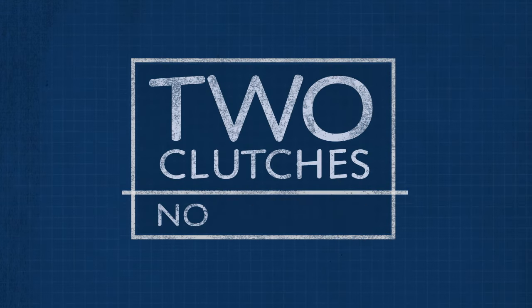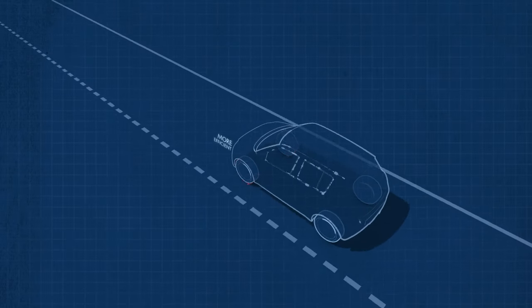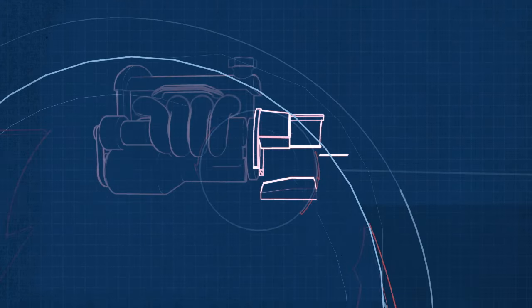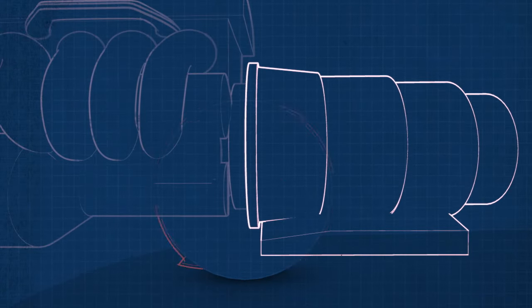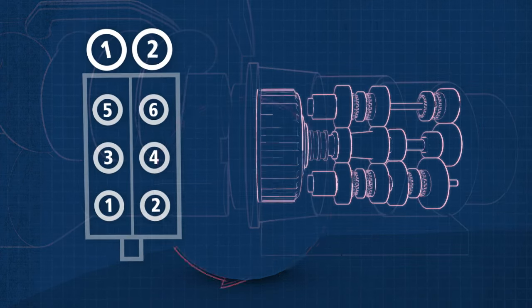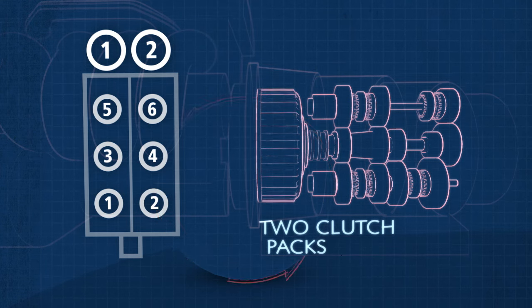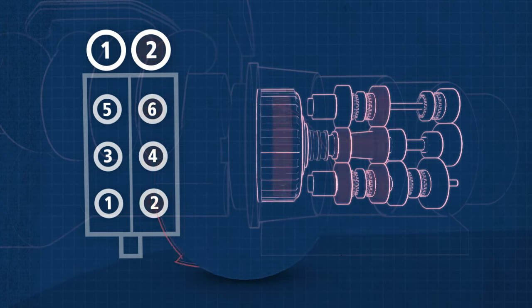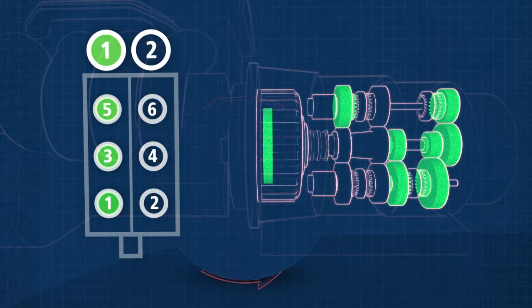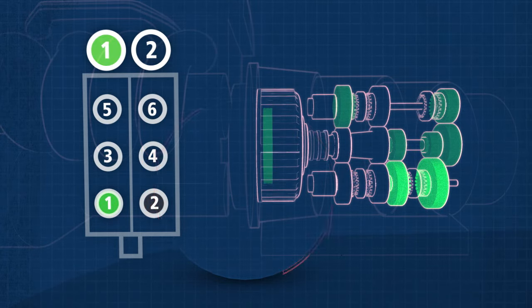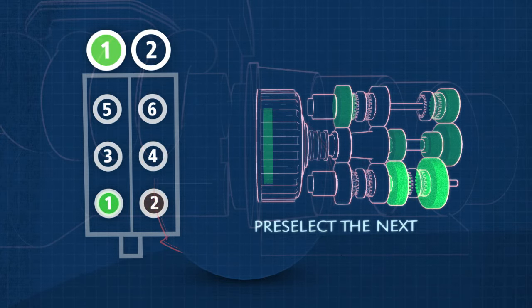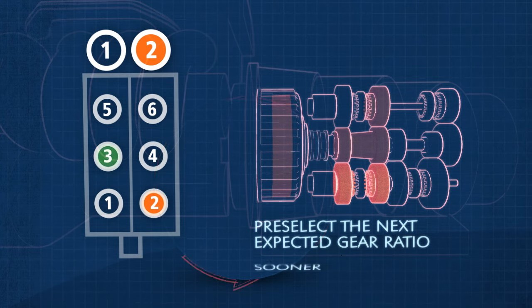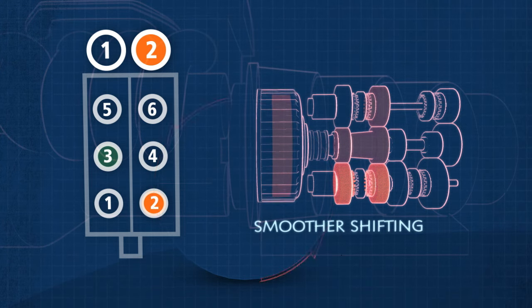Two clutches, no waiting. Dual-clutch automatic transmissions are significantly more efficient than traditional automatics. This transmission differs from a traditional automatic transmission, in that it has two clutch packs instead of a torque converter to help reduce fuel consumption. One clutch for even-numbered gears, the other for odd-numbered gears. This allows the vehicle to pre-select the next expected gear ratio sooner, resulting in smoother shifting.